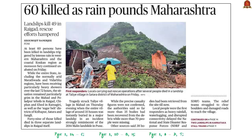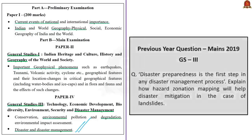Our next discussion is based on a news article reporting that 60 people were killed due to landslips in Maharashtra, triggered by intense rain in western Maharashtra and the coastal Konkan region. Heavy rainfall, waterlogging, and disrupted connectivity delayed response from the National and State Disaster Response Forces. Today, let us understand what landslips are, areas prone to landslips in India, and mitigation measures. This topic is important from a disaster management perspective — in the 2019 GS3 mains paper, there was a question asking how hazard zonation mapping helps disaster mitigation in cases of landslides.